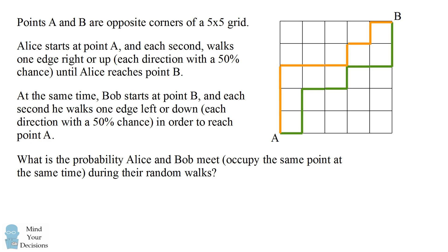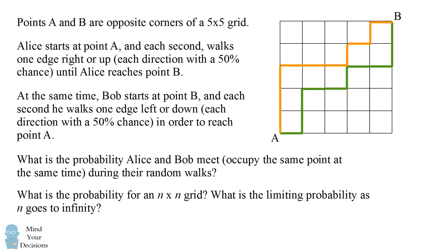By meeting, I mean they occupy the same point at the same time. What is the same probability for an n by n grid? And what is the limit as n goes to infinity? Give this problem a try, and when you're ready, keep watching the video for the solution.